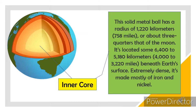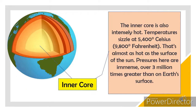The inner core is a solid metal ball with a radius of 1,220 kilometers — about three-quarters that of the moon. It is located some 5,180 to 6,400 kilometers beneath Earth's surface. Extremely dense, it is made mostly of iron and nickel. The inner core is intensely hot, with temperatures of about 5,400 degrees Celsius — almost as hot as the surface of the sun. Pressures here are immense, over 3 million times greater than on Earth's surface.